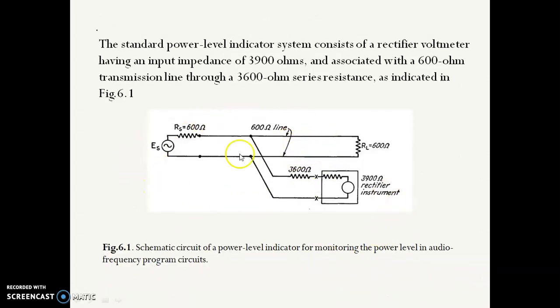The standard power level indicator system consists of a rectifier voltmeter having an input impedance of 3900 ohms, and associated with a 600-ohm transmission line through a 3600 ohm series resistance. You can see that the total of these two resistances will be 7500 ohms connected to the transmission line. So this is a 600 ohm line and alternatively the total resistance will be 7500 ohms connected across the transmission line.